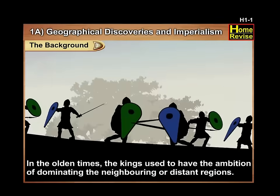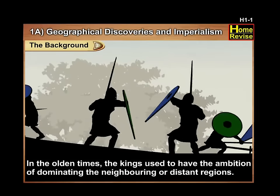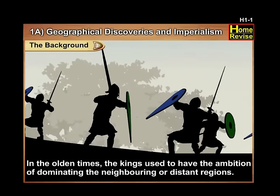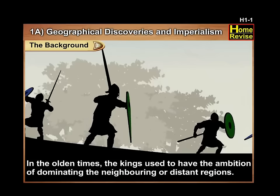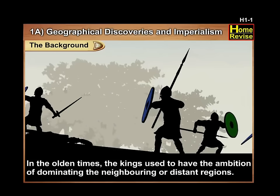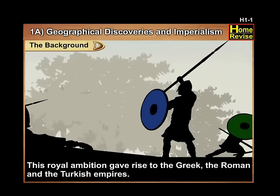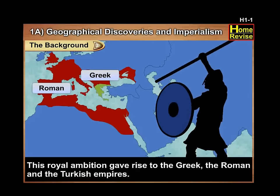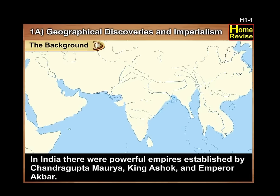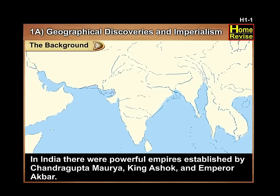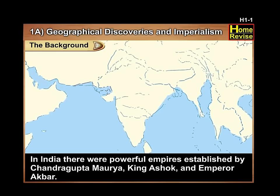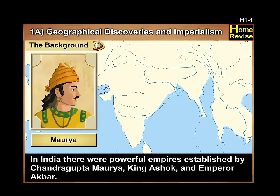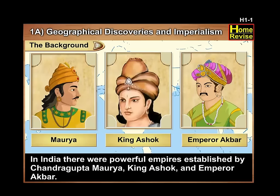In the olden times, the kings used to have the ambition of dominating the neighbouring or distant regions. This royal ambition gave rise to the Greek, the Roman, and the Turkish empires. In India also, there were powerful empires established by Chandragupta Maurya, King Ashok, and Emperor Akbar.